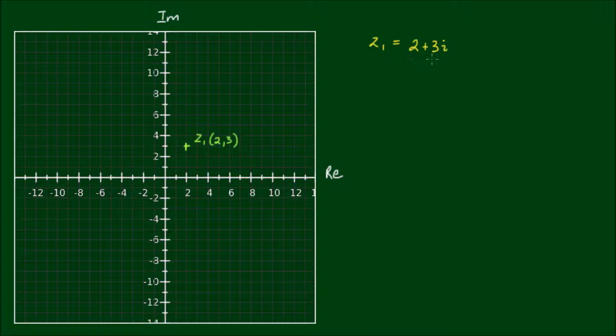So another way to represent a complex number instead of writing 2 plus 3i is to write 2, 3. And be careful not to confuse this with coordinates in plane geometry, so be aware of the context.